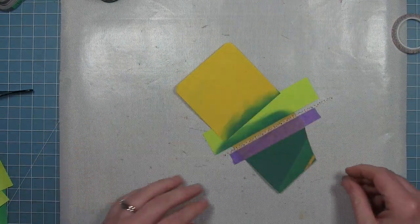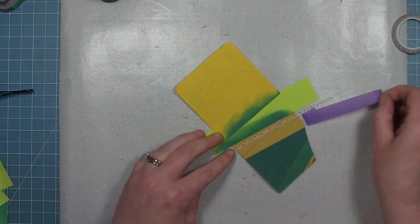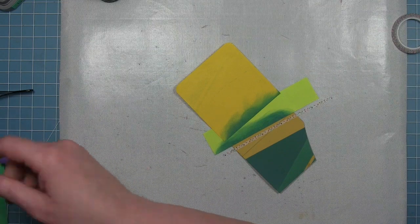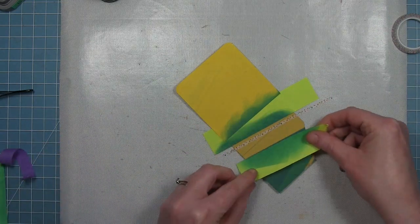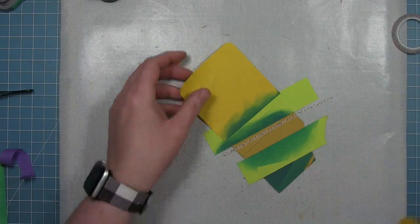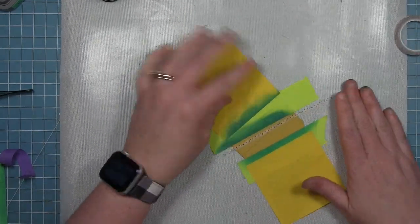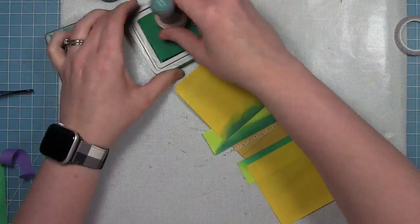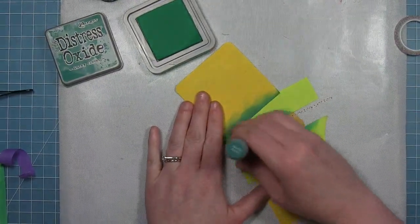And then I can mask the rest off with my post-it note tape and I will pull up that purple tape. Because that's where my stripe is going to go.